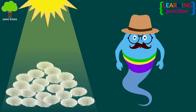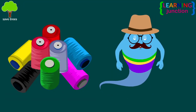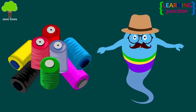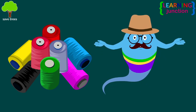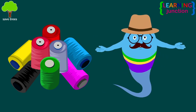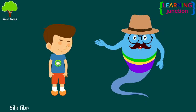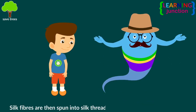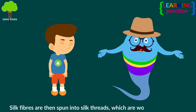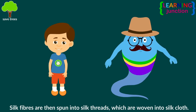The silk fibers separate out from the cocoon using machines. This process is known as reeling the silk. Silk fibers are then spun into silk threads, which are woven into silk by the weavers.